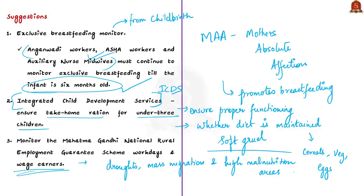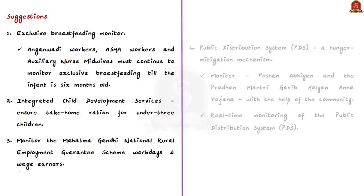Wages earned in areas where droughts are common, where mass migration is common, and where high malnutrition is prevalent should be specifically monitored. According to the author, there is a need for a body like the National Nutrition Monitoring Bureau. This bureau used to conduct diet and nutrition surveys and evaluate nutrition programs, but it was shut down some years ago. The government currently has no data on what families can afford to cook and what they are actually cooking, so either the bureau should be reinstated or a new body created.